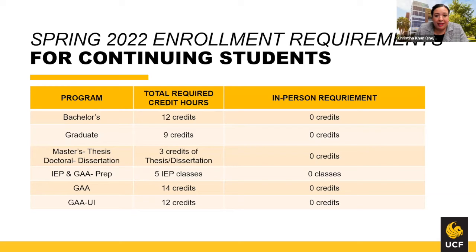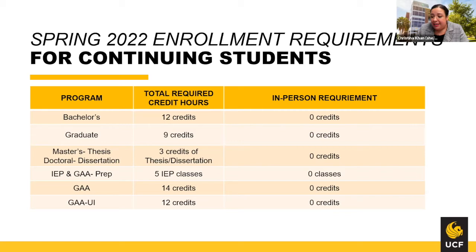For spring 2022, continuing students with an active SEVIS record — the majority of international students at UCF — have these enrollment requirements: bachelor's degree students need 12 credit hours with zero in-person required; graduate students need 9 credit hours with zero in-person; master's thesis-only and doctoral dissertation students need 3 credits; IEP and GAA Prep students need 5 IEP courses; the GAA program needs 14 credit hours; and GAA University Integration needs 12 credit hours.